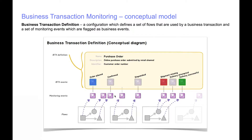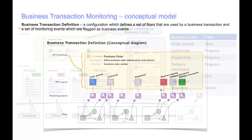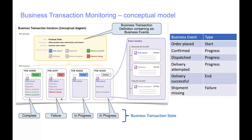Having defined and deployed your message flows with monitoring events, you can create a business transaction definition. A business transaction definition comprises of individual business events. In the business event, you specify which monitoring event is part of a business transaction by defining it with a particular type. The types that you can have are start, progress, end, and failure. These business events are used to correlate the state of a business transaction.